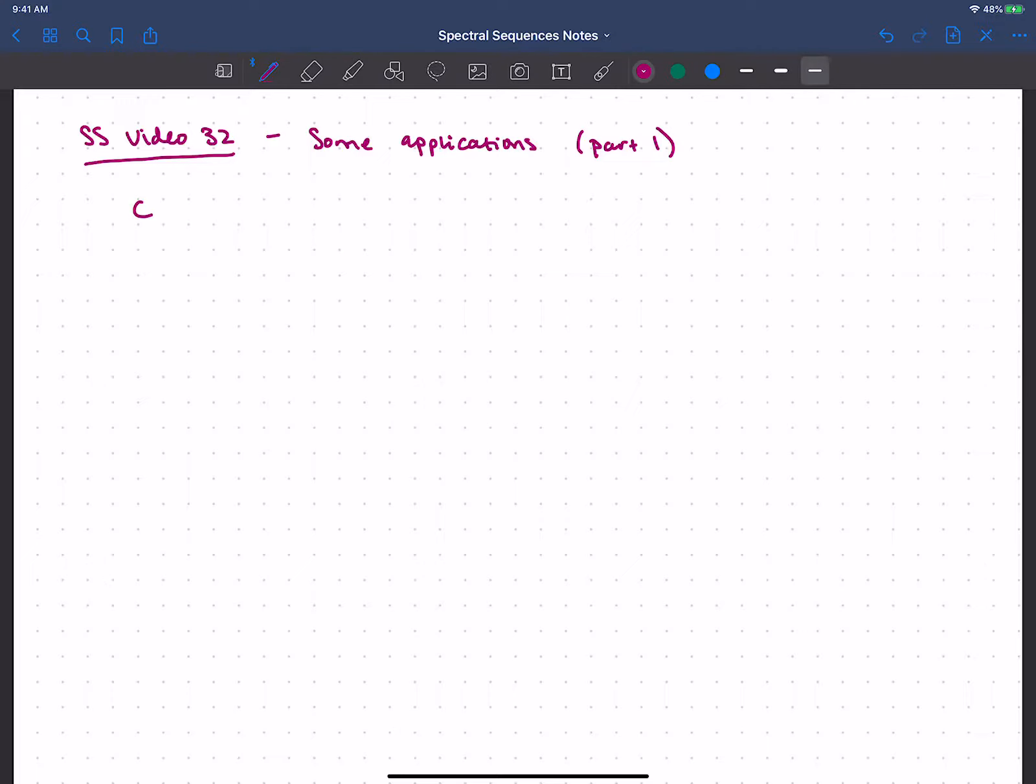So let C be a first quadrant, that's bad to say spectral sequence, but a first quadrant double complex. And we saw in the last video that there were two ways to filter that complex, giving us really a filtration of the total complex.